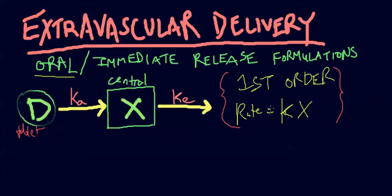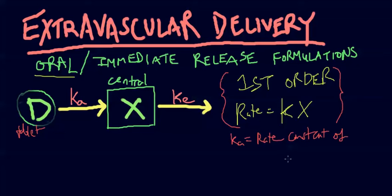This whole system is first order. First order means the rate equals k times x, where k is the rate constant and x is the amount of drug. We actually have two rate constants here: ka is the rate constant of absorption, and ke is the rate constant of elimination. ka is going in, ke is leaving.